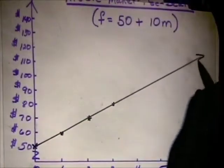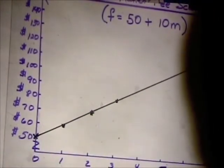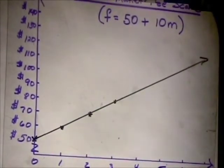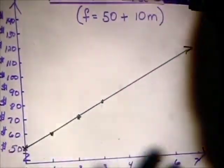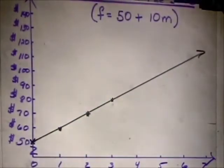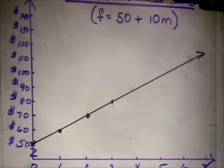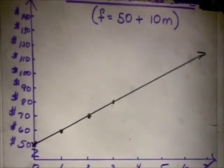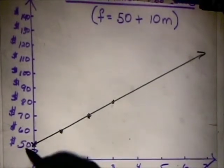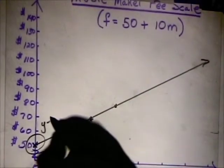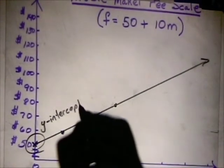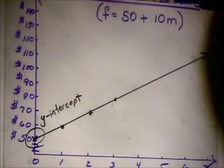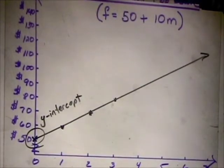We have a continuous rate of slope. Notice I did not extend the line downward — you can't have negative minutes of song and you can't have negative dollars, so it makes no sense. This is a first-quadrant grid. The line will almost always cross the y-axis somewhere, and that point is called the y-intercept.